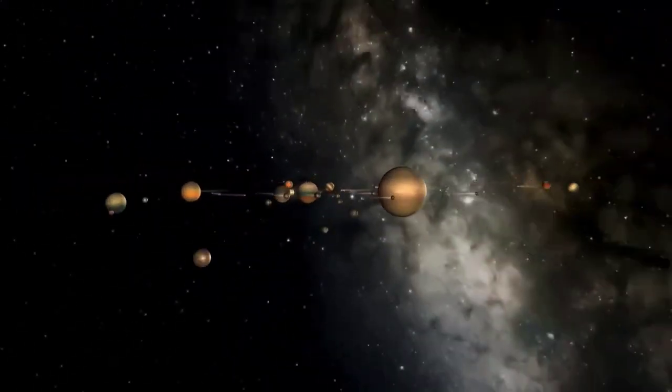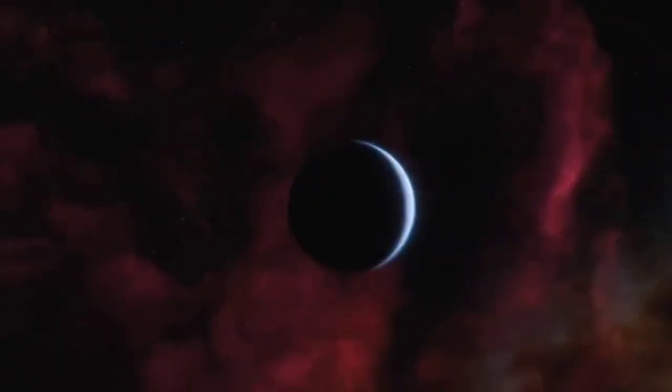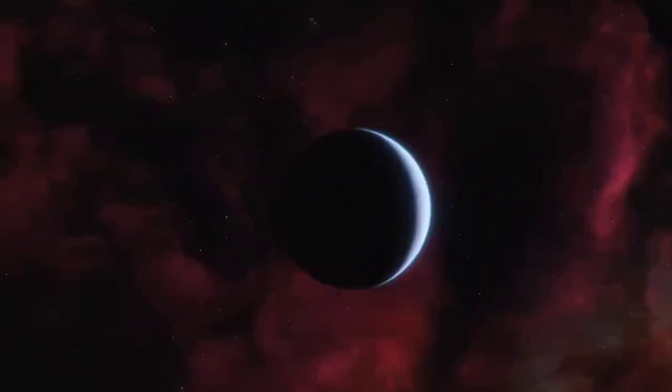Rogue planets, also known as free-floating planets, are a form of planetary body that does not have a fixed orbit around a star, and instead drifts alone in space.